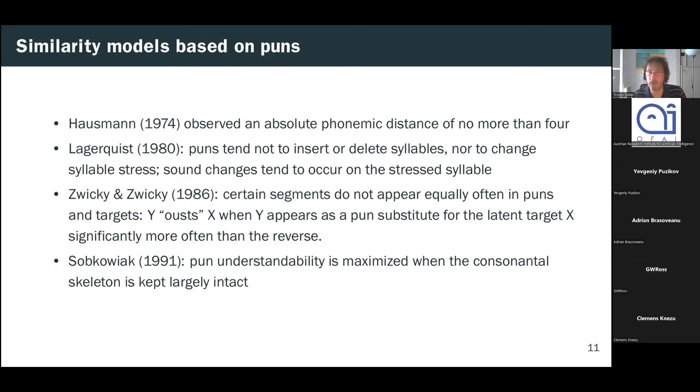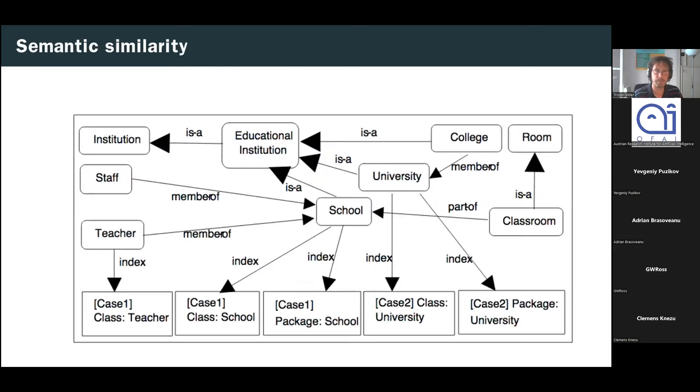Lagerquist also observed that when a sound change does occur in punning, it almost always occurs on a stressed syllable. Lagerquist observed that certain segments do not occur equally often in puns and targets, and they dubbed this phenomenon ousting. So they say that Y ousts X when Y appears as a pun substitute for the latent target X significantly more often than the reverse. Lagerquist and Walfur Sapkawiak presented the first book like study on the phonology of puns in 1991. He confirmed many of Lagerquist's findings and also concluded that sound changes to consonants tend to prefer word initial and word final positions. Nonetheless, pun understandability is maximized when the consonantal skeleton is kept largely intact. That is, vowels carry a lower information load and therefore are more freely mutable across the punting target.